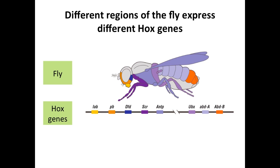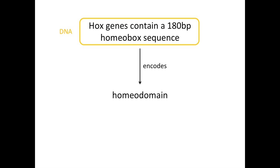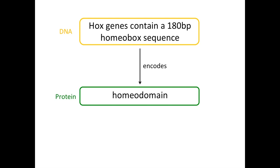When the first Hox genes were sequenced, it became clear that they all contained a short stretch of 180 base pairs of sequence that showed similarity to all the other Hox genes. This stretch of sequence was called the homeobox, and it encodes the part of the Hox protein that directly binds to DNA. This stretch of the protein is called a homeodomain — so the DNA sequence is a homeobox and the corresponding encoded protein domain is the homeodomain. The homeodomain generally forms a helix-loop-helix-turn-helix structure, which allows it to bind to DNA.